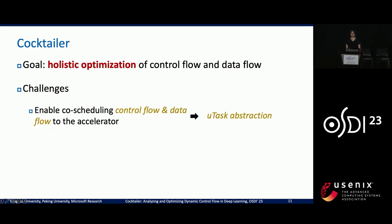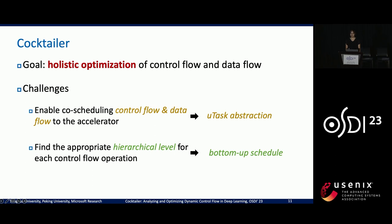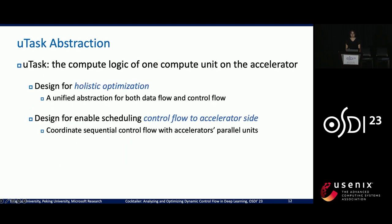To achieve holistic optimization of control flow and data flow, we first need to enable the execution of both on accelerators. So we propose U-task, a unified abstraction for both of them. Additionally, modern accelerators are designed hierarchically and have multiple parallelization levels. We need to select the appropriate level for each control flow operation to ensure efficient execution. So we propose a bottom-up schedule policy. We define U-task as a compute logic of one compute unit on the accelerator. The logic includes both control flow and data flow, so we can optimize them holistically. This abstraction can represent sequential control flow in a parallel manner, allowing us to schedule sequential control flow to a set of parallel executors.